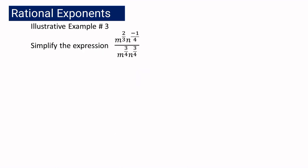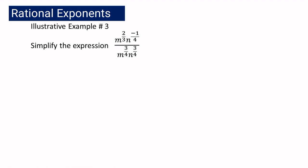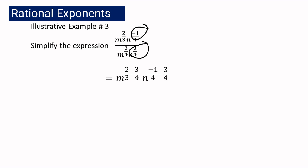For our example number 3, we have here m raised to 2 over 3, n raised to negative 1 over 4, divided by m raised to 3 over 4, and then n raised to 3 over 4. Following the law of exponent, we are going to copy the same base m and subtract the exponents, and also for n — copy n and subtract the exponents. So we have m raised to 2 over 3 minus 3 over 4, and n raised to negative 1 over 4 minus 3 over 4.